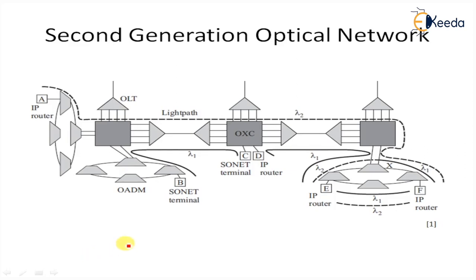OLT means optical line terminal. It multiplexes multiple wavelengths onto a single fiber, and demultiplexes them to different fibers. OADM stands for optical add-drop multiplexer, and OXC stands for optical cross connect.